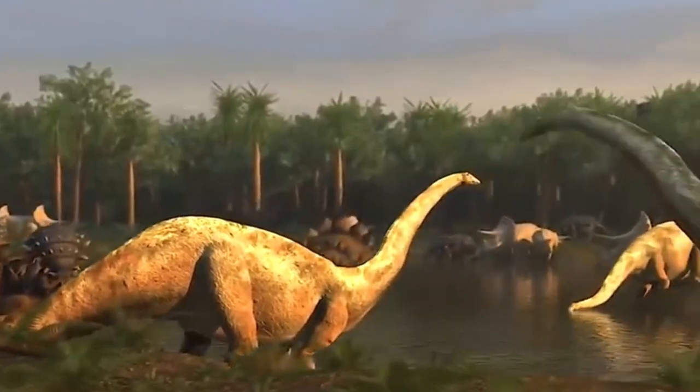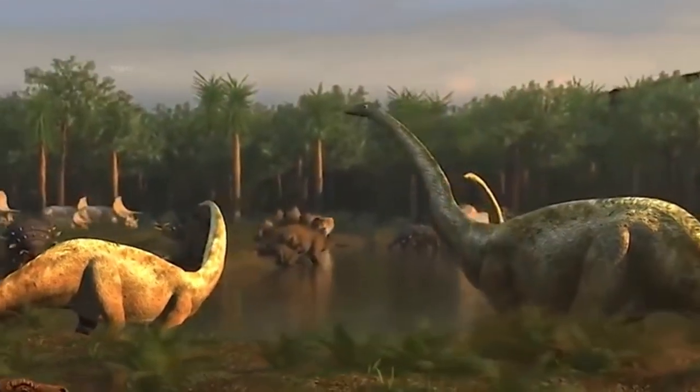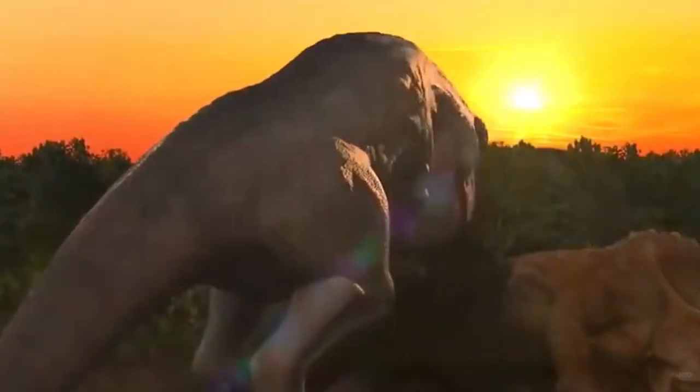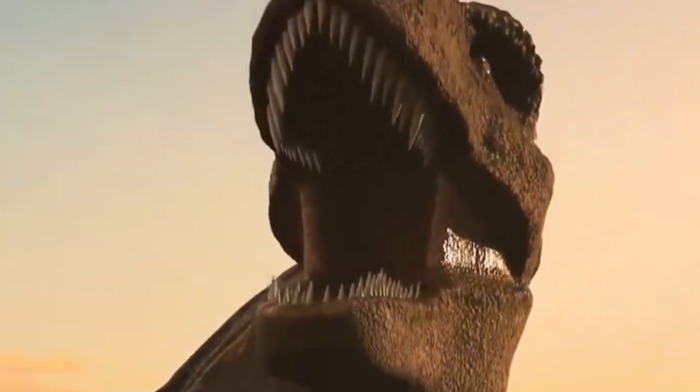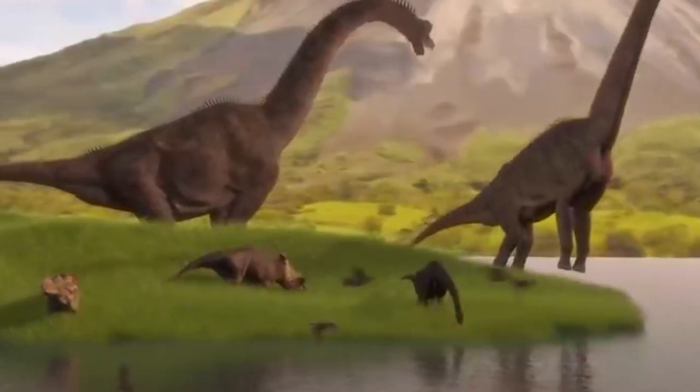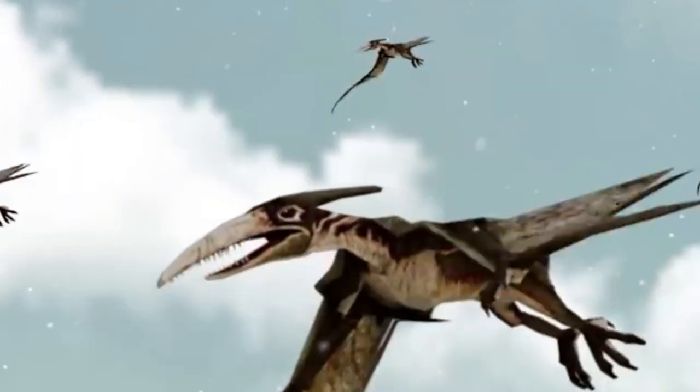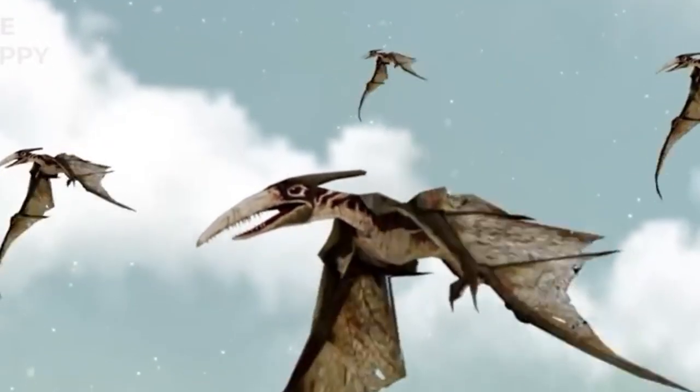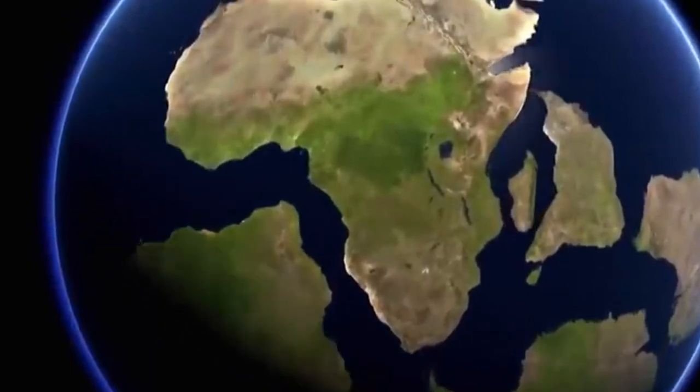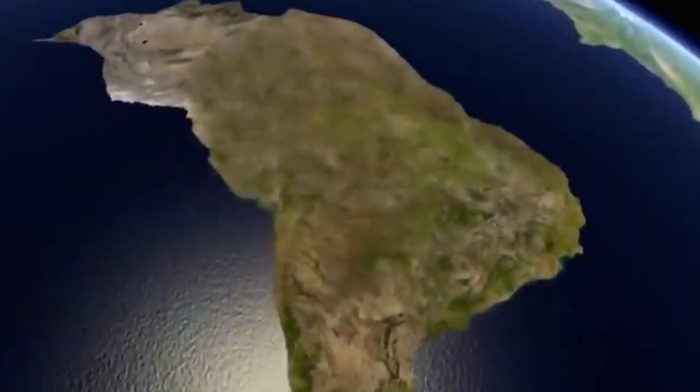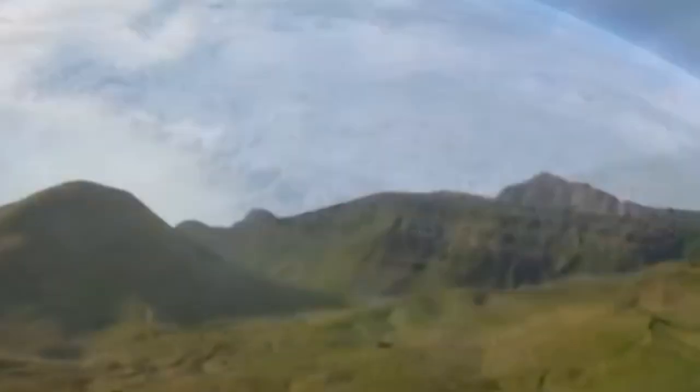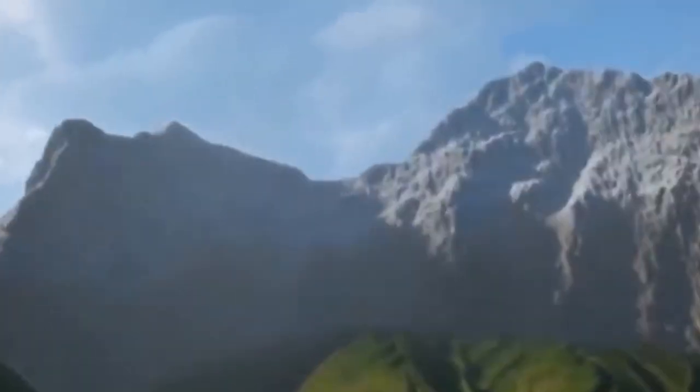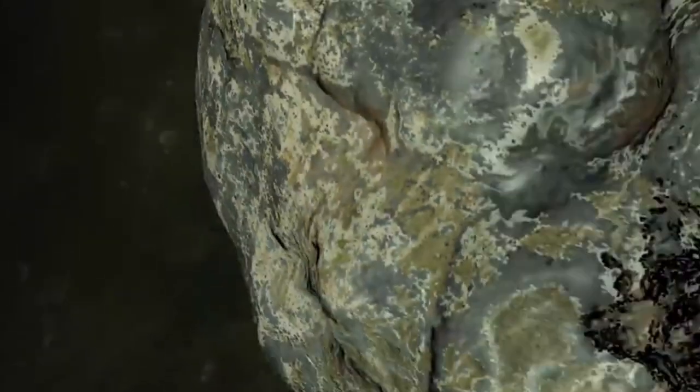Despite the dominance of dinosaurs, this era came to an abrupt end with a catastrophic event, widely believed to be a massive asteroid impact, leading to the mass extinction at the close of the Cretaceous period. This event reshaped the trajectory of life on Earth, marking the end of the Age of Dinosaurs, and opening the door for the rise of mammals in the Cenozoic Era. The echoes of the Mesozoic, however, linger in the fossilized remains, and in our fascination with these incredible creatures that once roamed our planet.